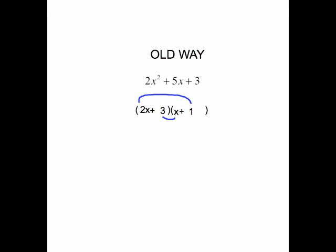So let's get those out of the way and swap our 3 and 1 around. Now do the check. 3 times x is 3x. 2x times 1 is 2x. When you add those together you do get the 5x. So those are your steps for doing the trial and error method.